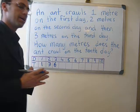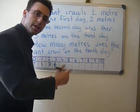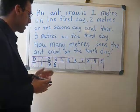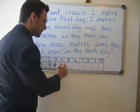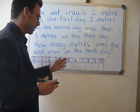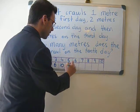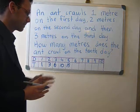After day two, it is one plus two equals three metres. Three plus three equals six metres. And we are going to do this all the way through.